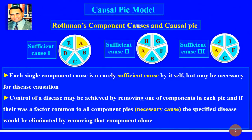The Causal Pie Model, or Rothman's Component Causes and Causal Pie, is useful for describing multifactorial causal mechanisms, as sufficient causes are a set of causal components represented by the pie. This represents conditions and events which are sufficient for disease to occur. For the same disease, there may be different sufficient causes. If a component appears in every sufficient cause, it is called a necessary component cause.